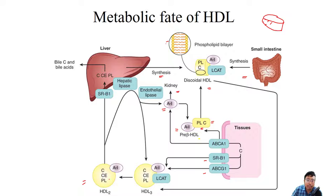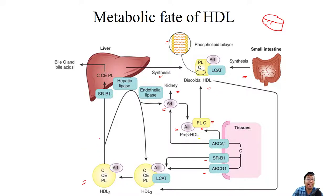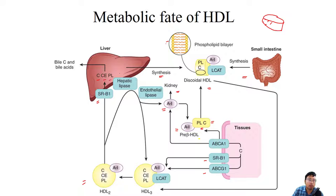In reality, HDL3 is in very close proximity to the discoidal HDL. HDL3 upon receiving donation from extra-hepatic tissue is converted to HDL2. HDL2 has multiple fates. One fate: it enters the liver via SRB1, which identifies ApoA1 as a ligand. Once inside, it gets ruptured and cholesterol, cholesterol ester, and phospholipid are all deposited in the liver, where cholesterol is used for synthesis of bile salts and bile acids. This is the reverse cholesterol transport pathway.